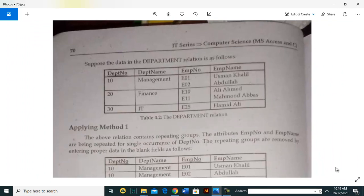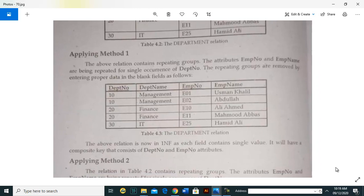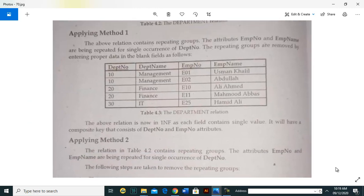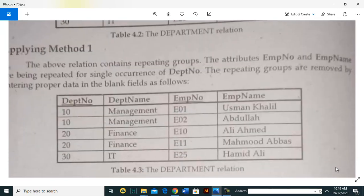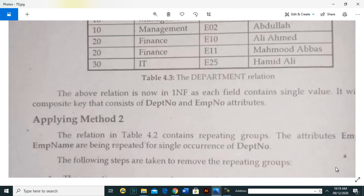How will it be in first normal form? To do this, we will create separate rows for each. Look at the next table: the employee numbers that were two in the upper table, we have separated them into individual rows with their respective names.